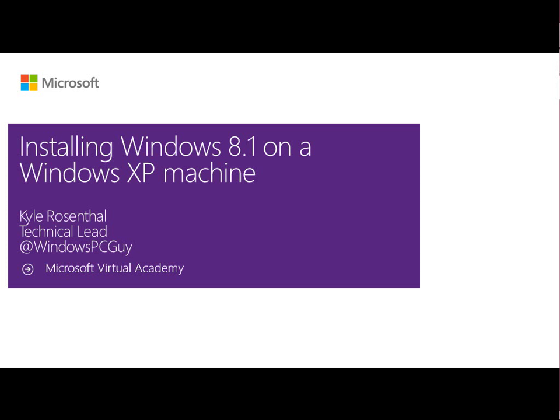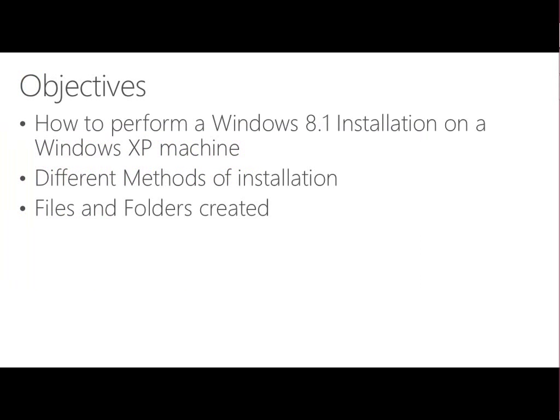This module is a pretty basic one - it's about installing Windows 8.1 directly onto a Windows XP machine. We're not looking at any imaging or anything like that; we're just simply doing an installation. We're going to look at how to perform a Windows 8.1 installation, the different methodologies and methods of installation, some of the steps along the way, and the files and folders that are created and what they'll be useful for.